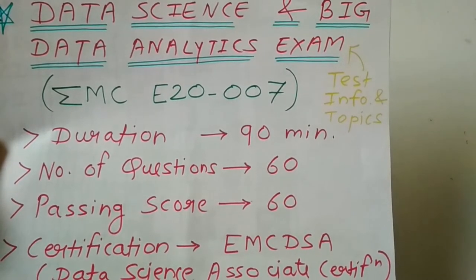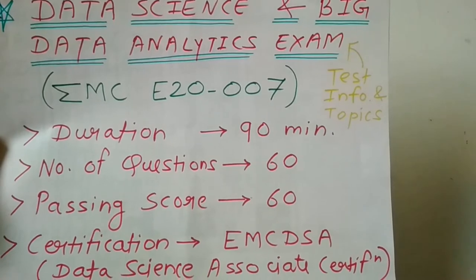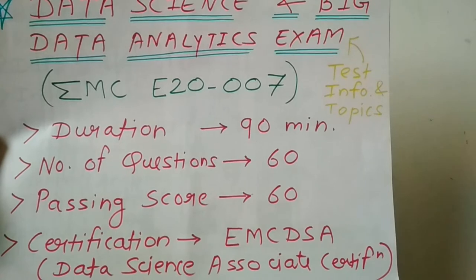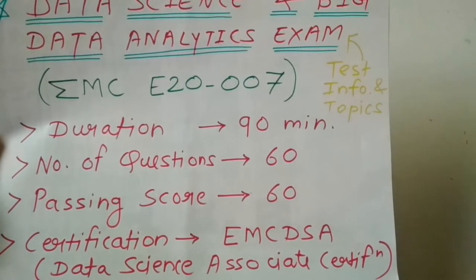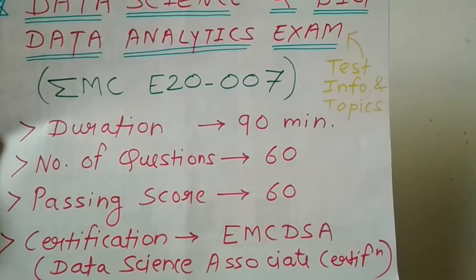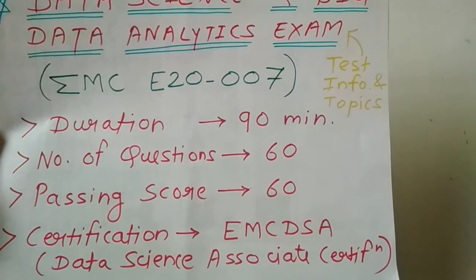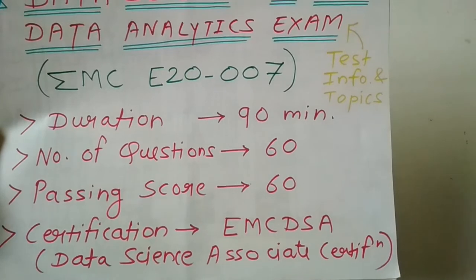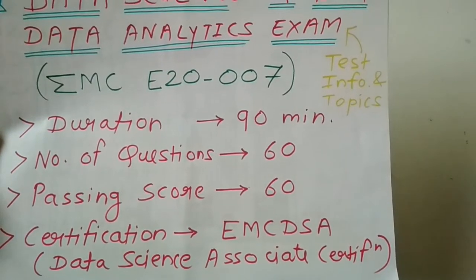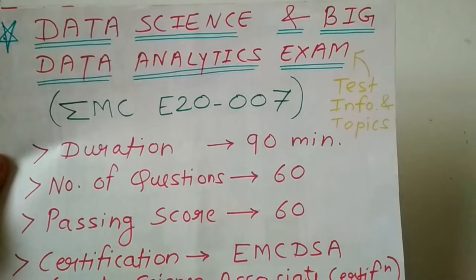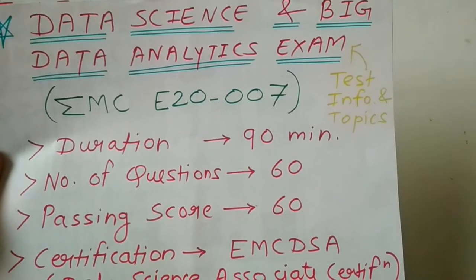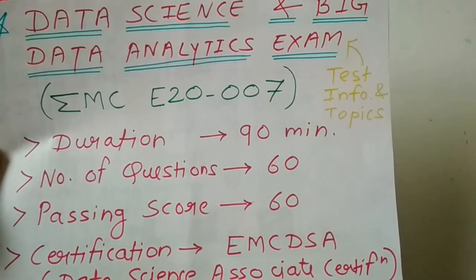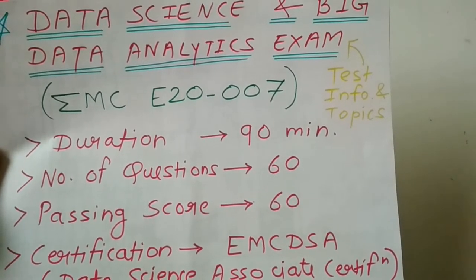Talking about information about this exam: the duration is 90 minutes, the total number of questions is 60, and the passing score is 60%. The certification name is EMC-DSA, that is the Data Science Associate certification. It is an objective type exam — there will be four options given to you and you will have to mark one of the four answers.